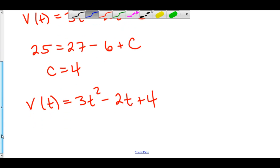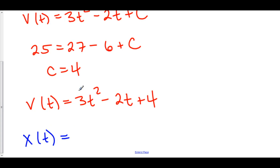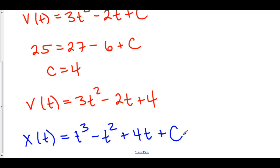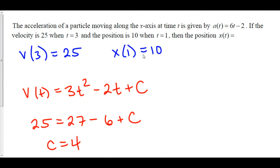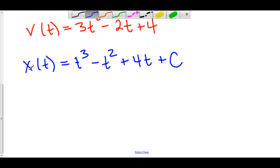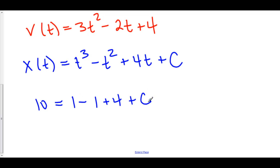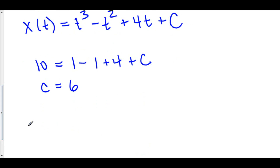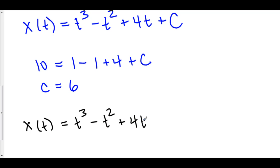Now let's find our position function — the antiderivative of our velocity function. The antiderivative of 3t² is t³, the antiderivative of negative 2t is negative t², the antiderivative of 4 is 4t, plus C. We know x(1) = 10, so we plug in: 10 equals 1 minus 1 plus 4 plus C. The 1 minus 1 cancels, so 10 minus 4 is 6, meaning C equals 6. Our position function is x(t) = t³ minus t² plus 4t plus 6.